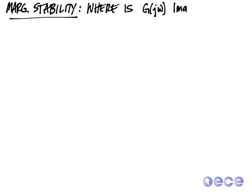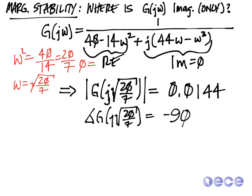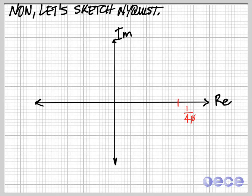So now we can start to sketch our transfer function. We can also check where G of j omega is only imaginary, but I'm going to skip that part. Now let's sketch the Nyquist based on the values we've already come up with. We know that as omega tends to 0 we have a gain of 1 over 40 and an angle of 0, so that puts us at this point. We know that we will also cross the real axis at minus 1 over 576.